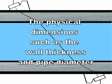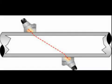The physical dimensions such as the wall thickness and pipe diameter. Also because of the mechanical considerations in mounting the transducers, we can extend the path of the ultrasonic signal.